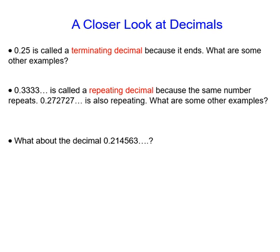0.25 is called a terminating decimal because it ends. Take a second to think: what might be some other examples of terminating decimals?